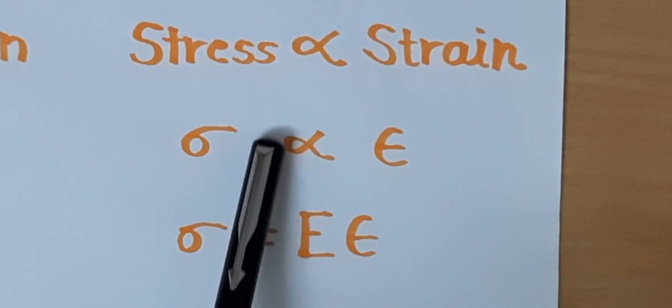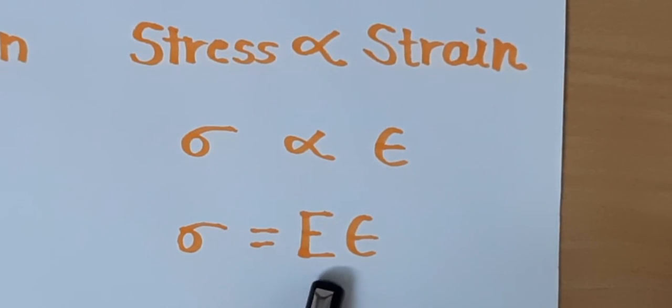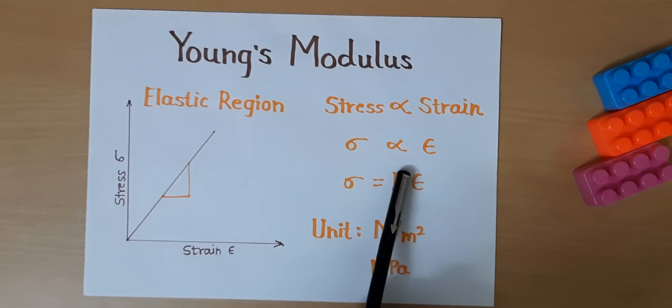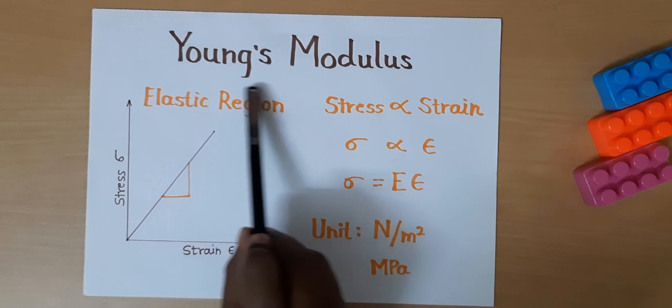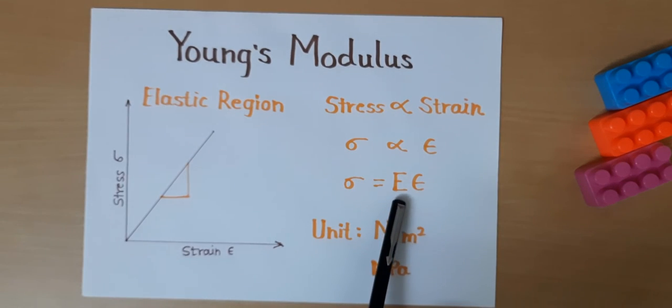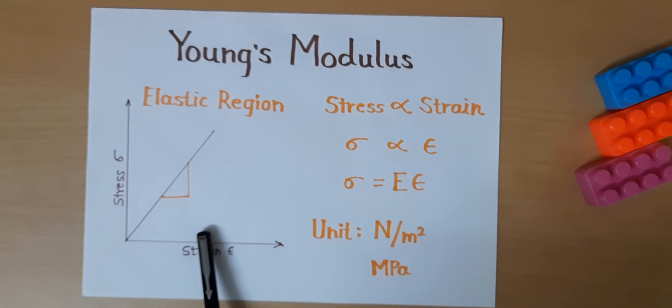It is mathematically written as stress sigma directly proportional to strain epsilon. To remove this proportionality sign, we introduce a new constant, a proportionality constant: σ = E × ε, where E is our Young's modulus. The value of E remains constant for any given material.